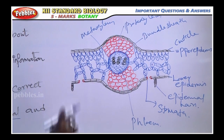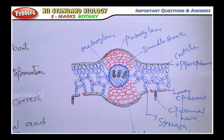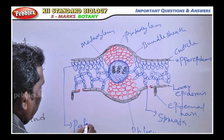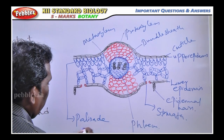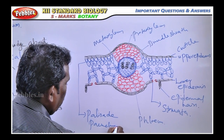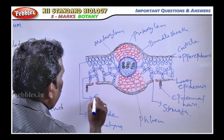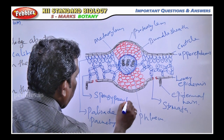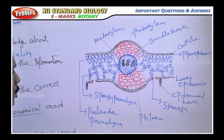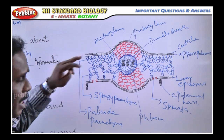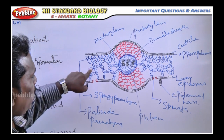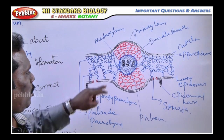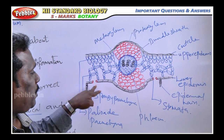This region is called mesophyll cells. One part is called palisade parenchyma and the other region is called spongy parenchyma. The basic difference: spongy parenchyma has a lot of intercellular spaces. This is useful because gaseous exchange takes place through these spaces with the help of stomata.